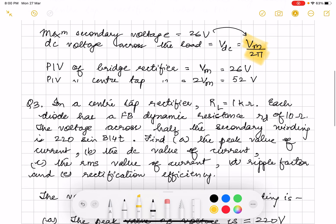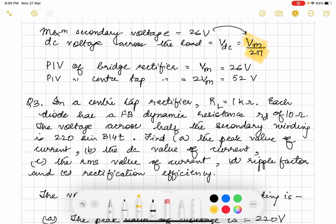This is a little longer one. In a center tap rectifier, load resistance is 1 k ohm. Each diode has a forward bias dynamic resistance Rd of 10 ohm. The voltage across half the secondary winding is 220 sin 314 T. If you remember this is similar to your Vm sin omega T. You have to find A the peak value of current, B the DC value of current, C the RMS value of current, D ripple factor and E rectification efficiency.